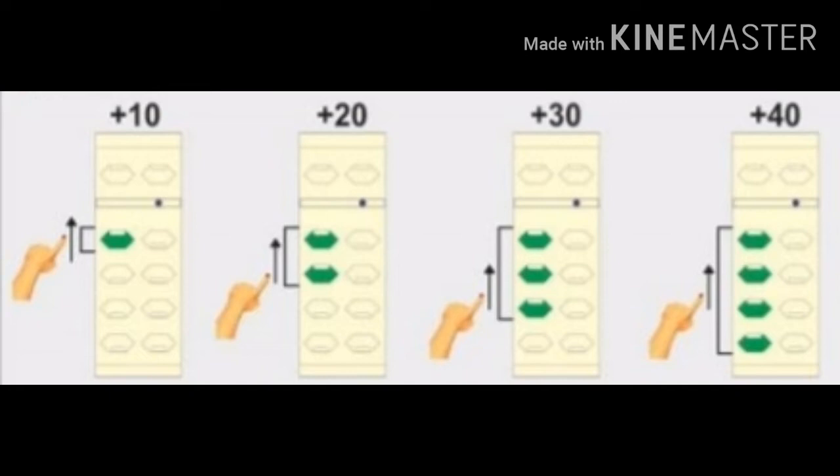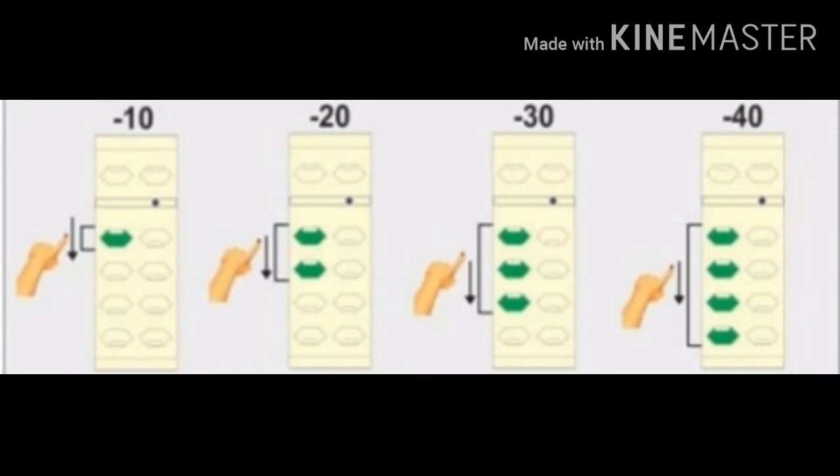Now see how you can do plus 20, plus 30, plus 40, plus 10. For plus 10, one bead up. For plus 20, two beads up. For plus 30, three beads up. For plus 40, four beads up. Now for minus: minus 10 is one bead down, minus 20 is two beads down, minus 30 is three beads down, minus 40 is four beads down.